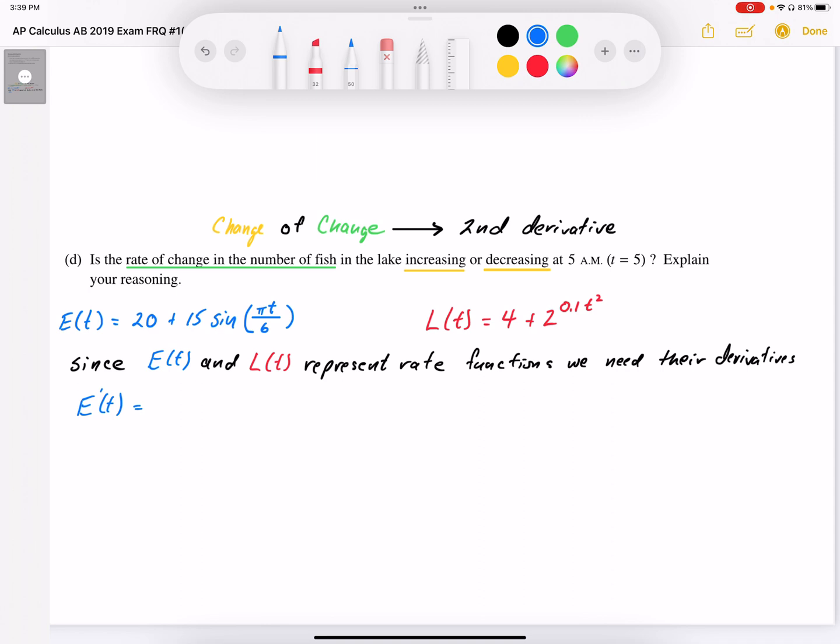this is going to work out to be 15 cosine of 6 pi t, and then using the chain rule, I'm going to multiply that by pi over 6.